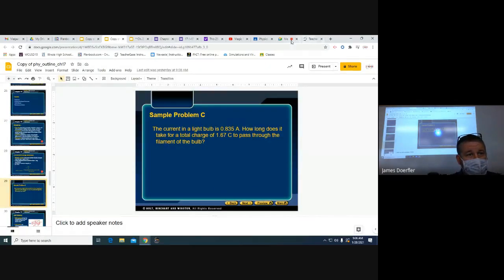While you're taking a peek at that, I'm going to get my whiteboard here. So the current in a light bulb is 0.835 amps. How long does it take for a total charge of 1.67 Coulombs to pass through the filament of the bulb? So, uh-oh, I don't have my OkioCam. Hold on, kids. If you are on the Google Meet, you might have to wait a second. You're muted, Mr. Dorfler. Now, is that better?